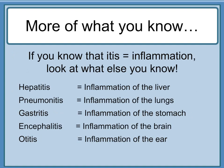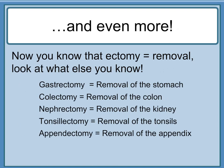More of what you know. If you know that '-itis' equals inflammation: 'hepatitis' equals inflammation of the liver; 'pneumonitis' equals inflammation of the lungs; 'gastritis' equals inflammation of the stomach; 'encephalitis' equals inflammation of the brain; 'otitis' equals inflammation of the ear. And if you know that '-ectomy' equals removal: 'gastrectomy' equals removal of the stomach; 'colectomy' equals removal of the colon; 'nephrectomy' equals removal of the kidney.